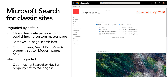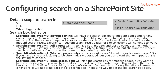For sites with custom master pages, everything will continue to work, but you'll be able to opt in to the Microsoft Search experience using the search box in navbar setting. There are two web and site collection level settings available now that you can set today. The first is the web.search scope setting, also available through PnP PowerShell, which allows you to set the default scope to site, hub, or whole organization level for a given SharePoint site.